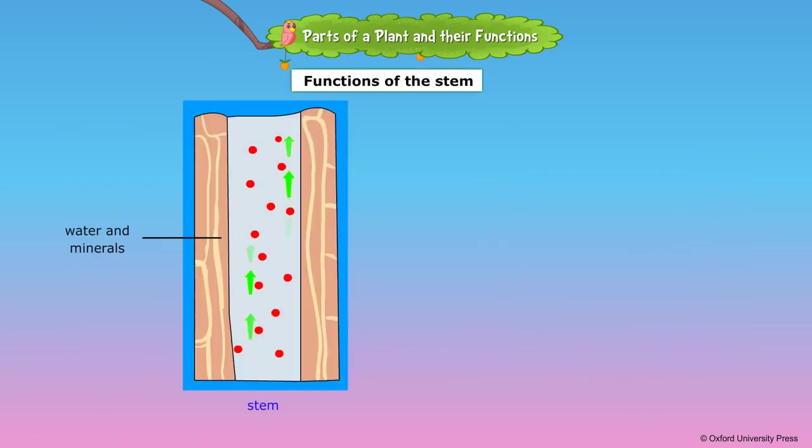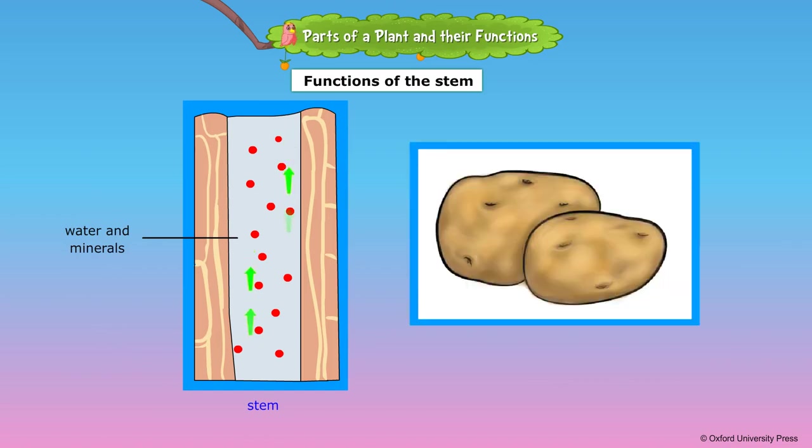The stem carries water and mineral salts from the roots to the rest of the plant. At the same time, it carries food made by the leaves to the rest of the plant. Sometimes extra food is stored in the stem. Potato and ginger are examples of plants that store food in the stem.